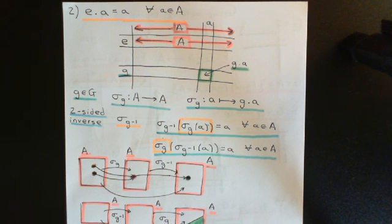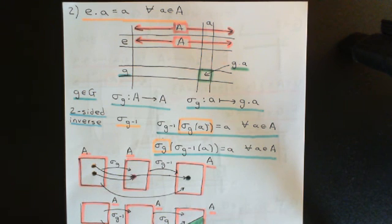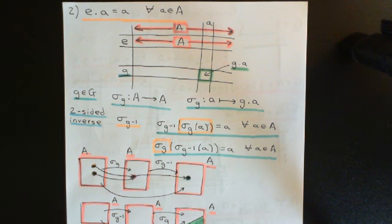There's another thing we need to check: we need to check that these set permutations of A that we are associating with the elements of group G are actually consistent with the group composition law. Going back to the motivation for group actions, those set permutations had to be consistent with the group composition law — composing two set permutations must give a result whose group representative equals the two group elements composed together.